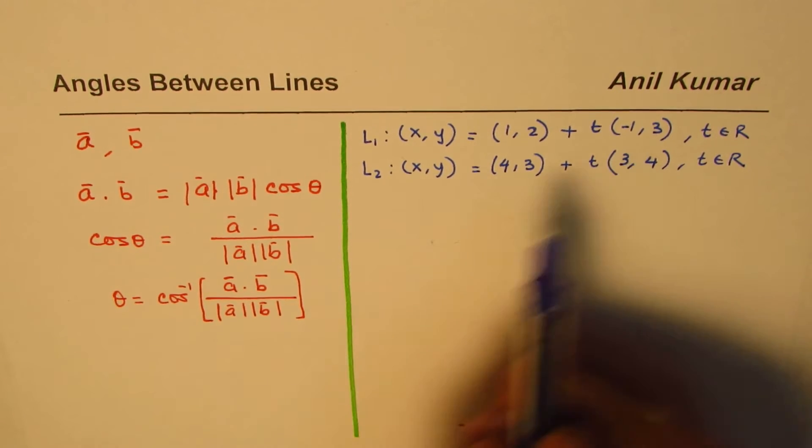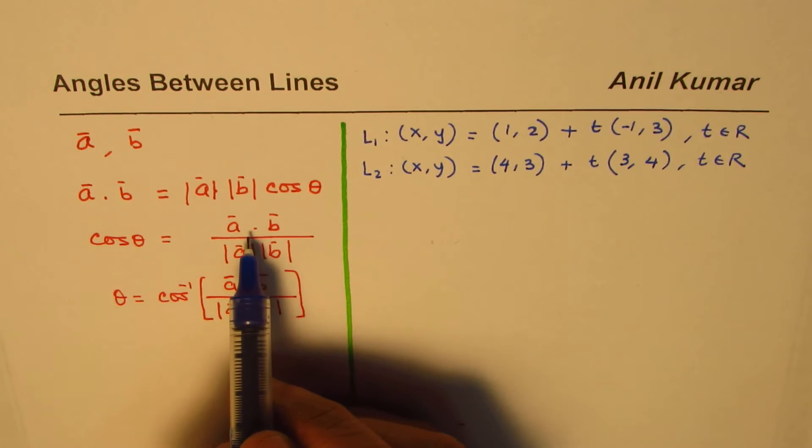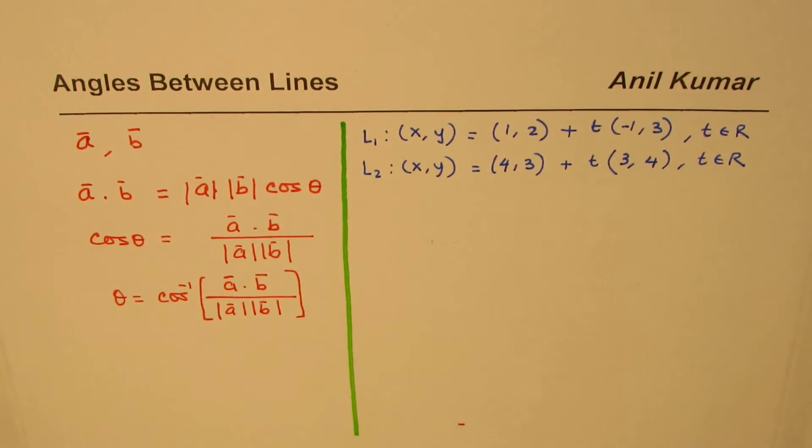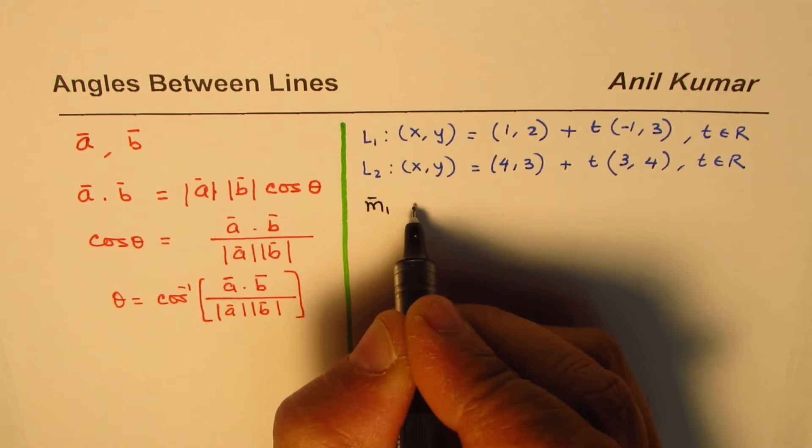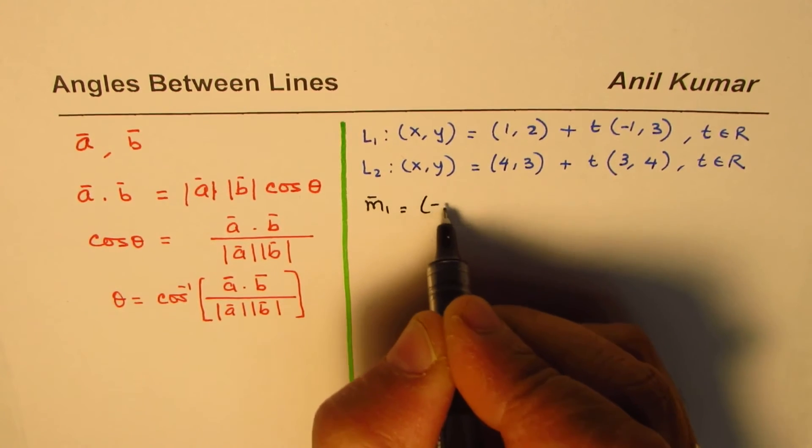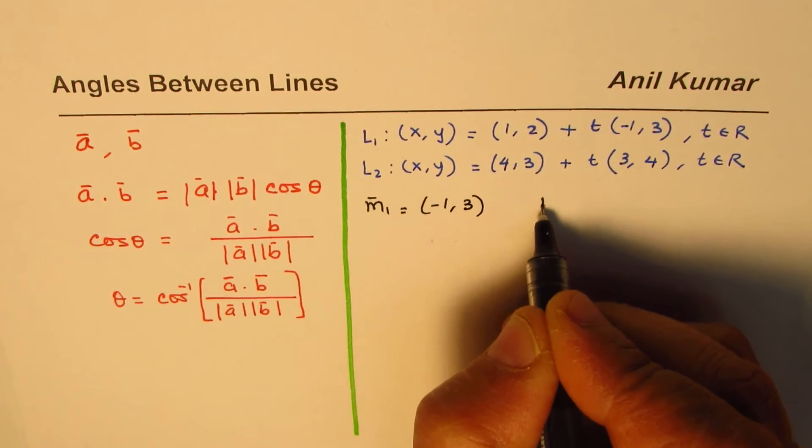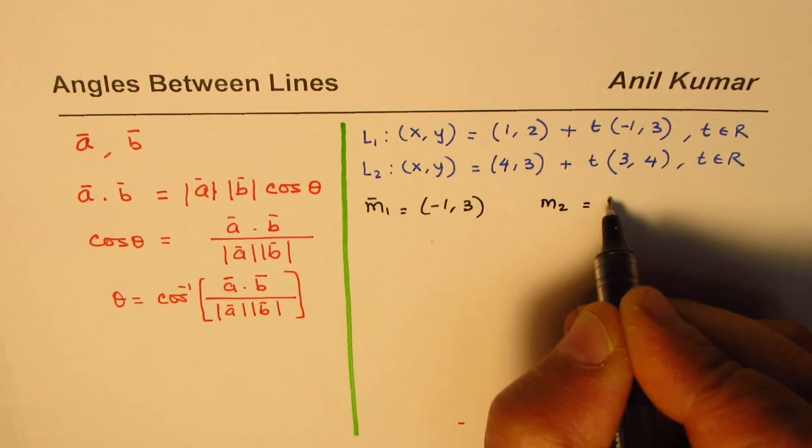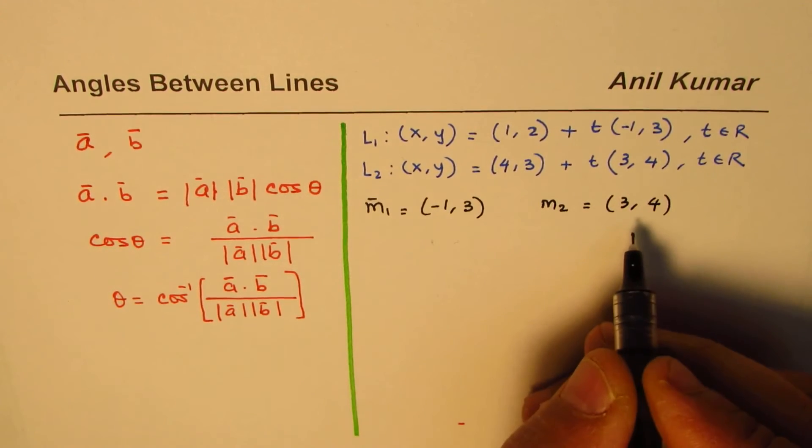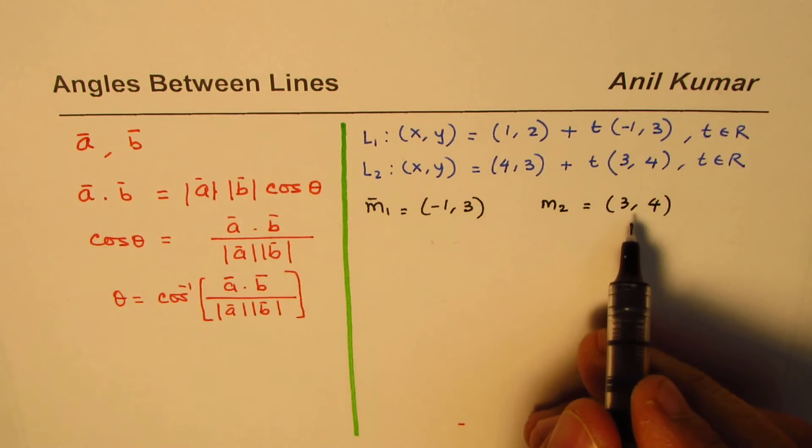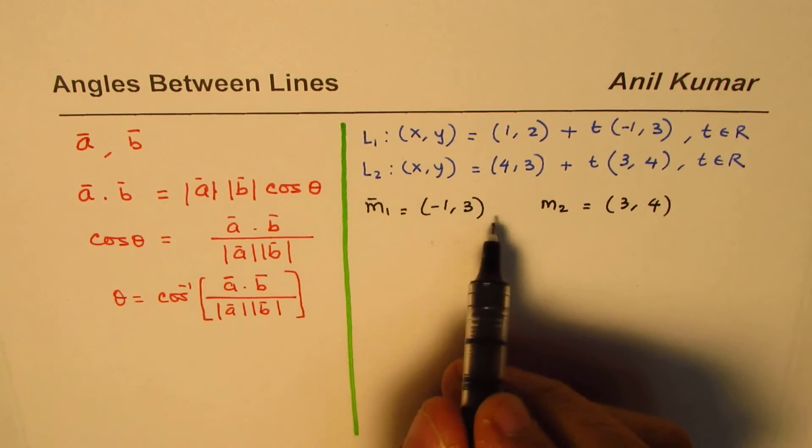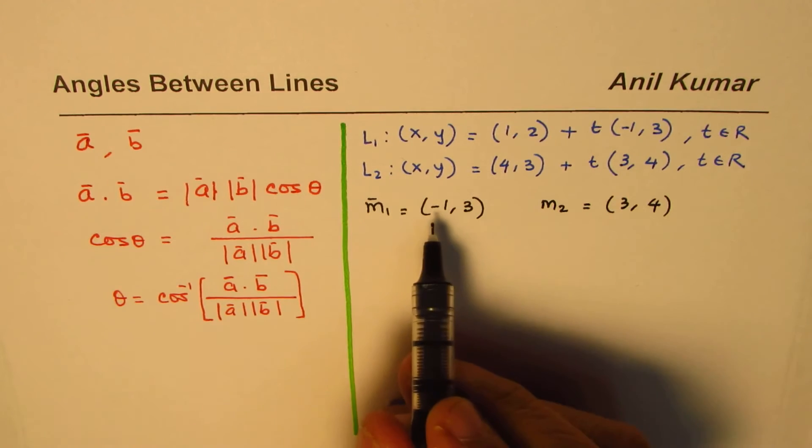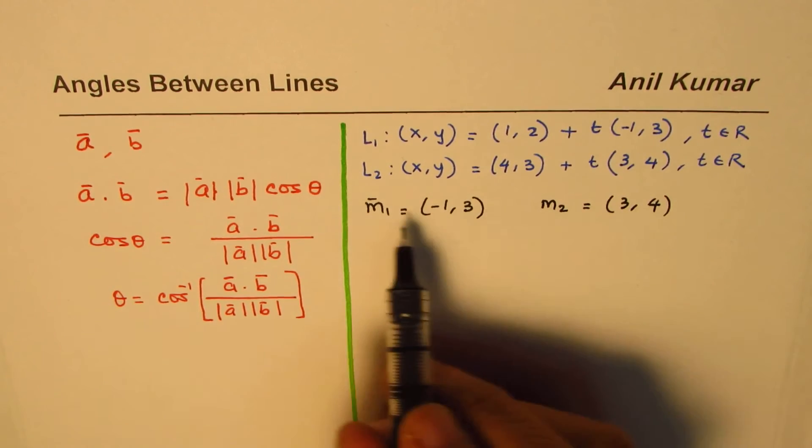In this equation, the two vectors we're talking about are direction numbers. The direction number m₁ is (-1, 3) and m₂ is (3, 4). The angle between these two lines will be the angle made because of these directions.